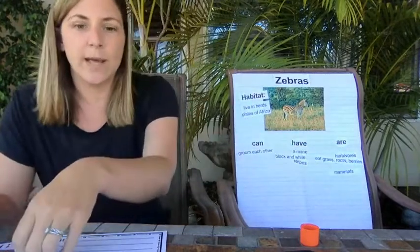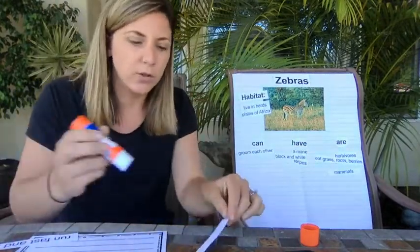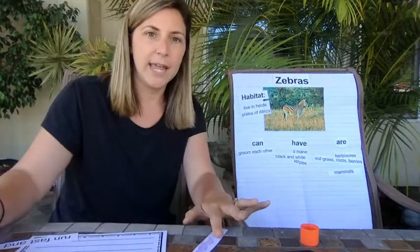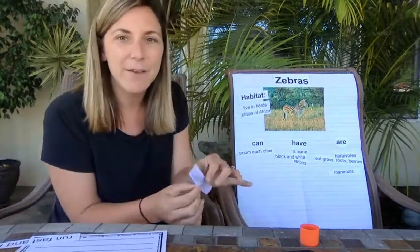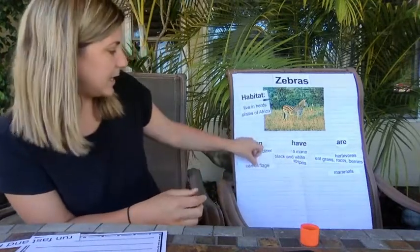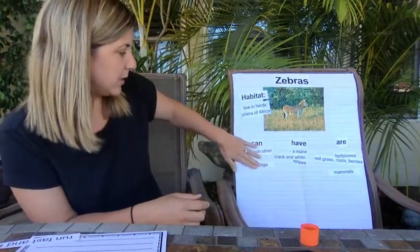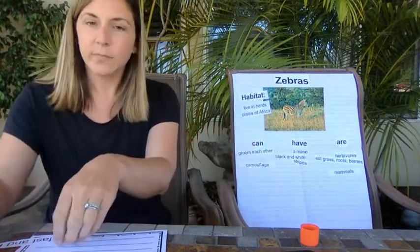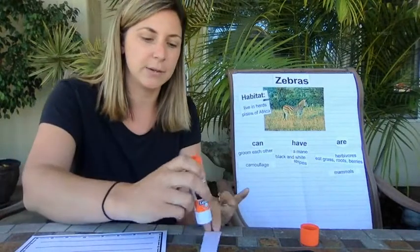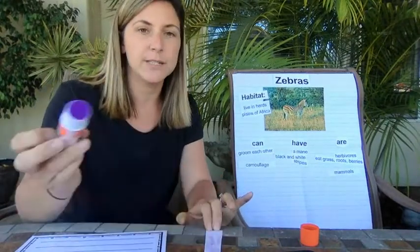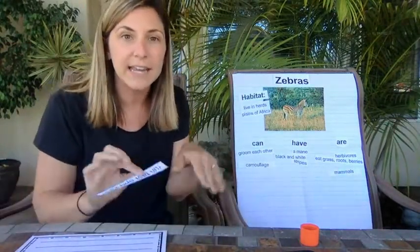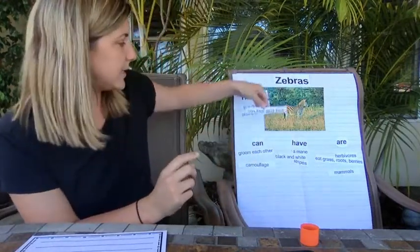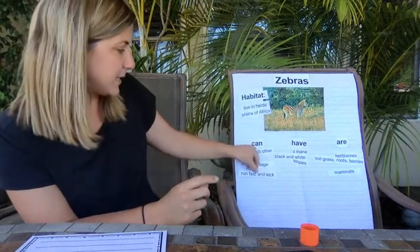What else do we know about zebras? They have black and white stripes, and those stripes help them with camouflage. Zebras can camouflage, and camouflage protects them from predators. Something else that protects zebras from predators is their ability to run fast and kick their back legs. So zebras can run fast and kick.